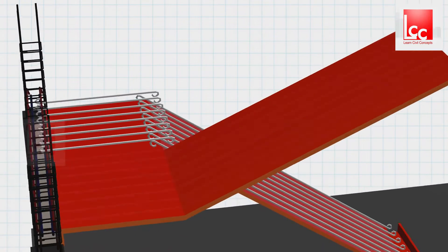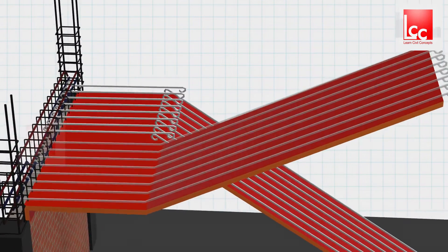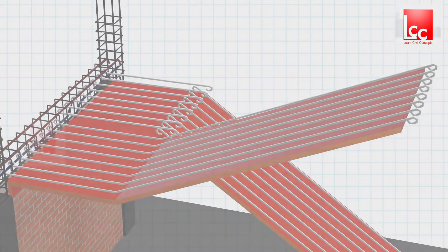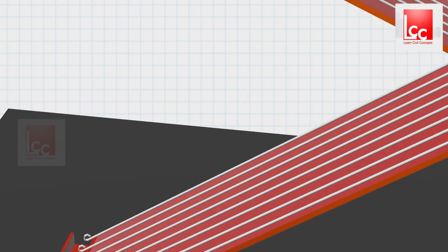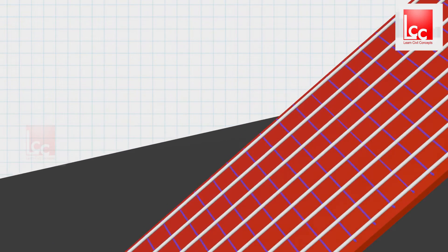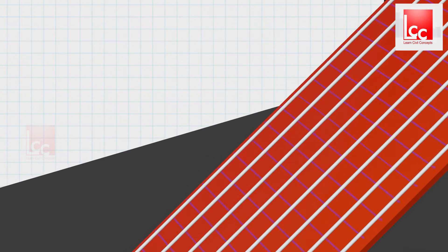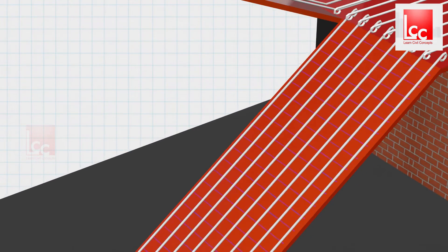Next, we have to provide the distribution bar of diameter 8mm as shown in the model. The spacing between the distribution bars will be equal and according to the GFC drawing or construction drawing.